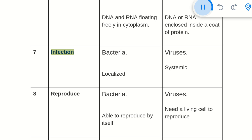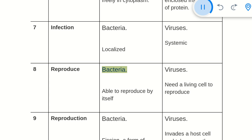7. Infection: Bacteria cause localized infection. Viruses cause systemic infection. 8. Reproduction: Bacteria are able to reproduce by themselves. Viruses need a living cell to reproduce.